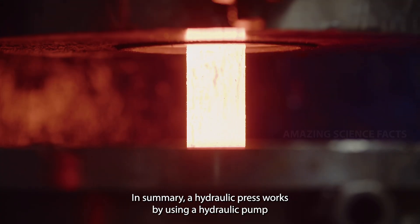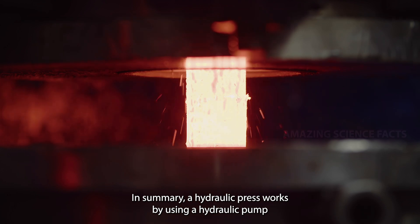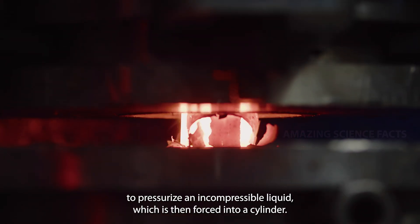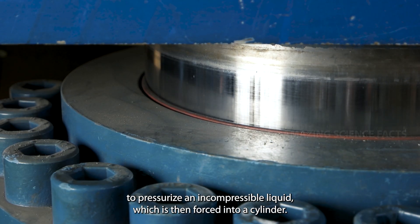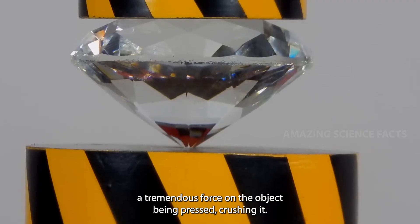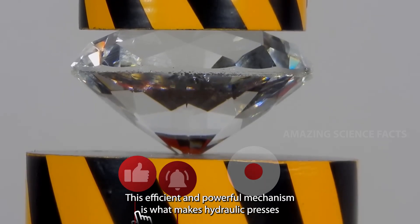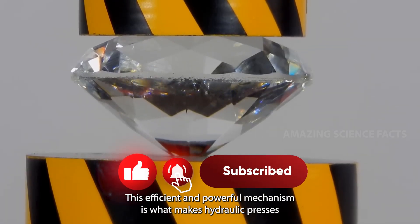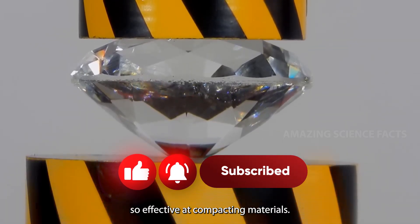In summary, a hydraulic press works by using a hydraulic pump to pressurize an incompressible liquid, which is then forced into a cylinder. The increased pressure moves a piston, which in turn exerts tremendous force on the object being pressed, crushing it. This efficient and powerful mechanism is what makes hydraulic presses so effective at compacting materials.